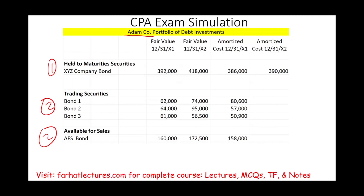We have three categories. We are given the fair value of year X1, the fair value of year X2, amortized costs for X1, and amortized costs for X2. For this simulation, I could ask you 10 to 15 different multiple choice questions easily, or I can give you a simulation and ask you to answer a few questions about the data given. In this simulation, that's what I will do.